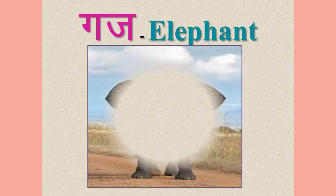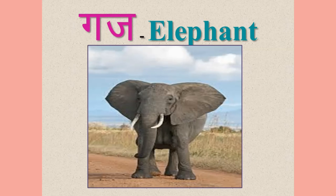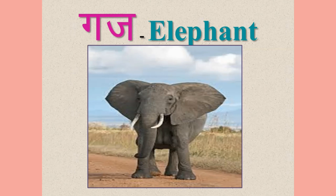Gase gaj. Gaj is elephant. Now you will ask me, ma'am, we learned another word for elephant when we were learning swat. Yes, you are correct. We learned I say airavat, and at that time I had told you that usually elephant is commonly called in Hindi as hathi, but it is also called as airavat and gase gaj.